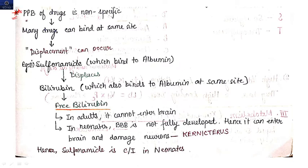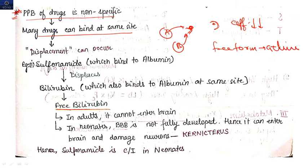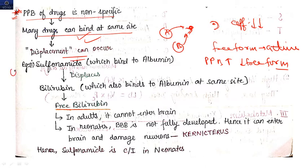Some important clinical points on plasma protein binding. Many drugs can bind at the same site. The drug with higher affinity will bind more and displace the drug with lower affinity. When a drug binds to plasma protein, its free form decreases — and only the free form is active. So more plasma protein binding means less free drug, less action, and also less toxicity. A classic example: sulfonamides bind to albumin and displace bilirubin, because both compete for the same albumin binding site. Sulfonamides have higher affinity and displace bilirubin, resulting in more free bilirubin.